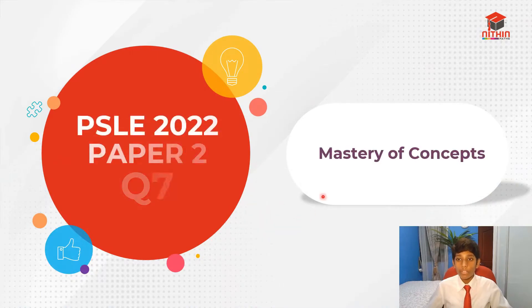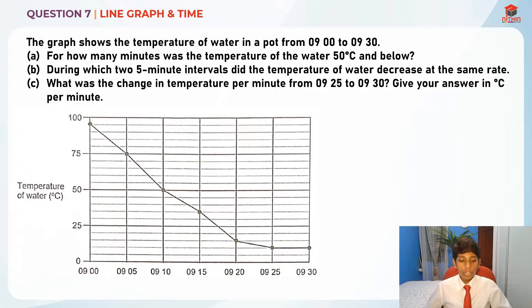Today I'll be going through question 7. So let's take a look at it. Question 7 tests us on line graph and time, and it comprises of three parts: part A, B, and C.